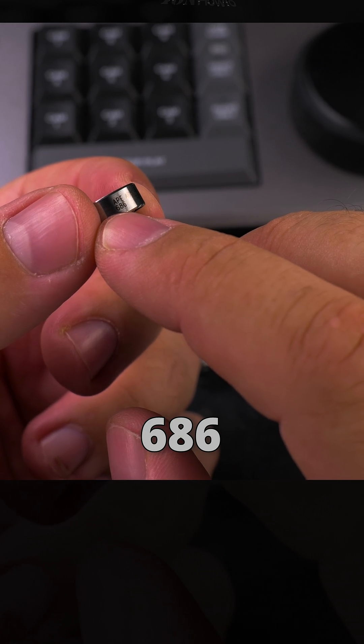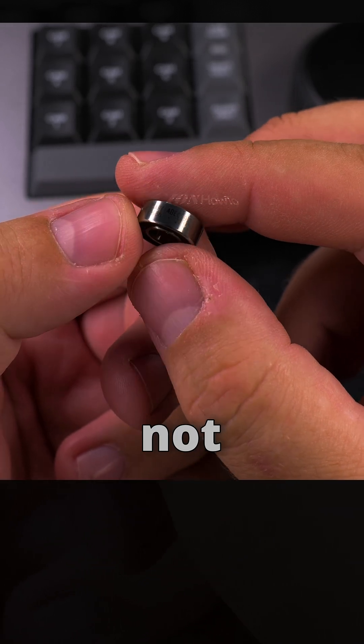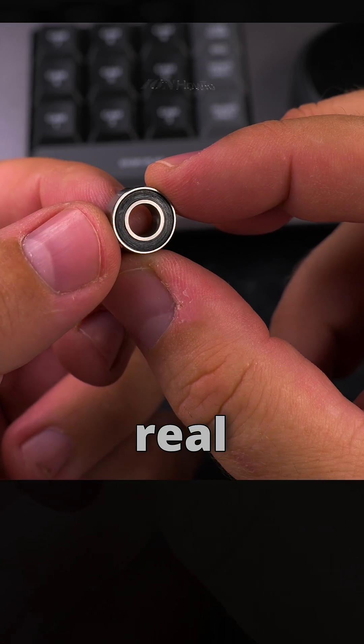And this one, APE, ABEC 9, 686, 2RS. This, I don't know this APE brand, but maybe they're not original, I'm not sure. I'll try them, see how the wheel feels like. They do spin really smoothly, so at least they are real bearings. And there is no marking on the edges.